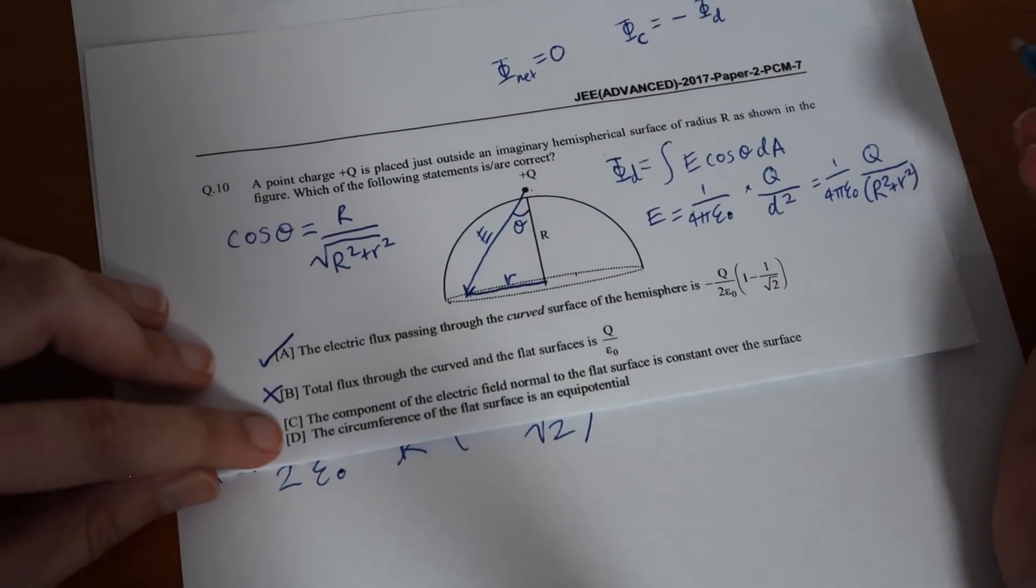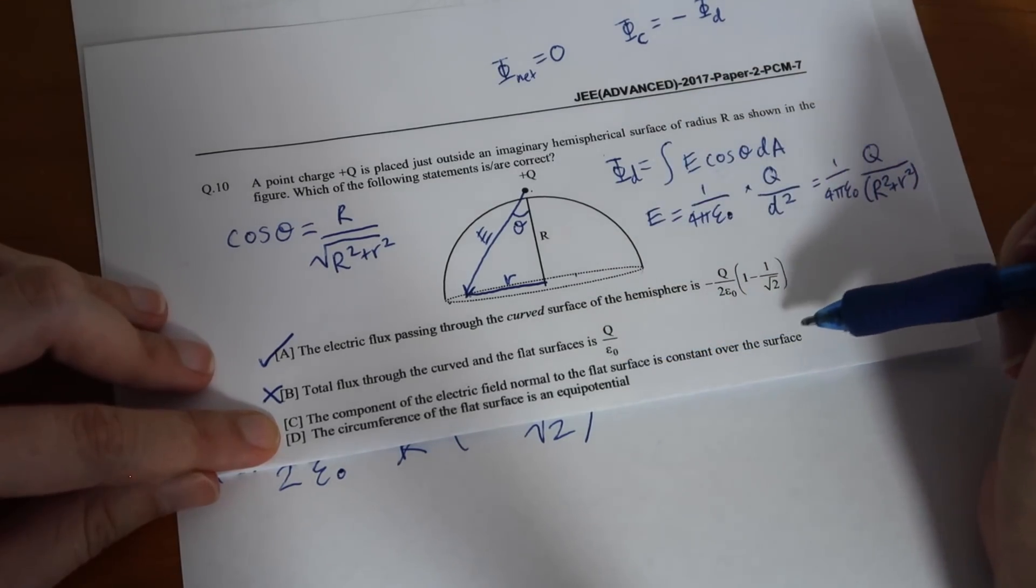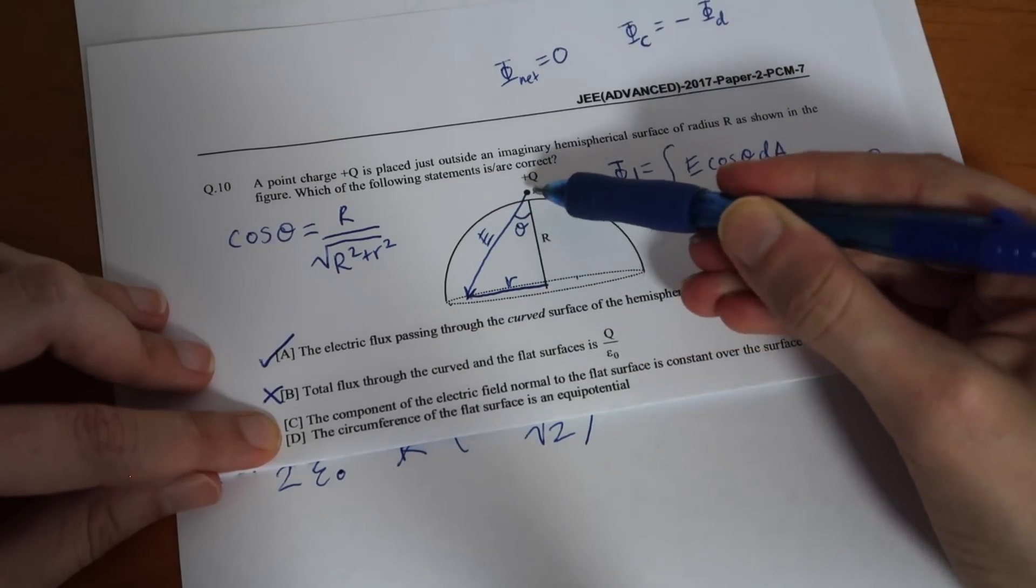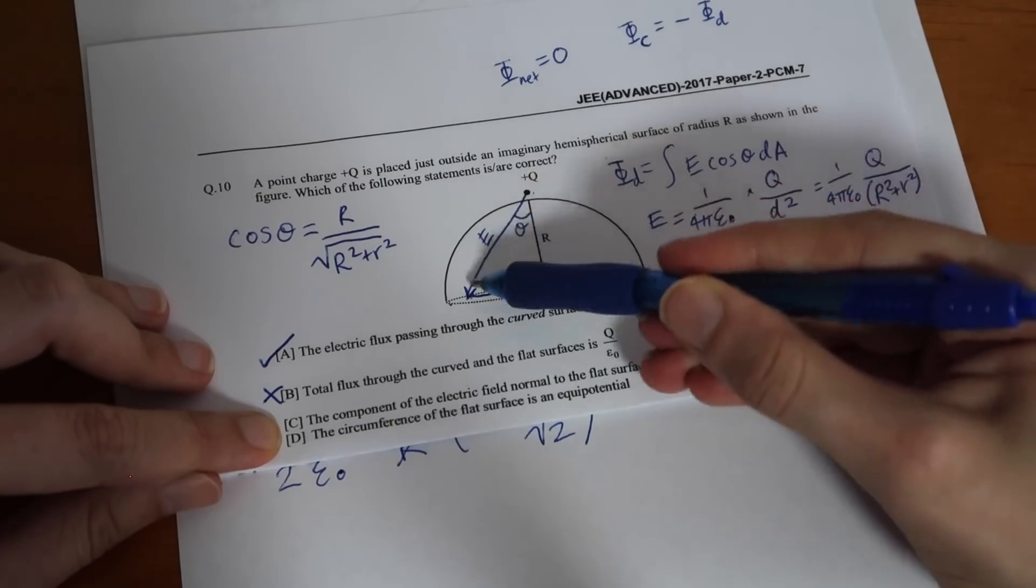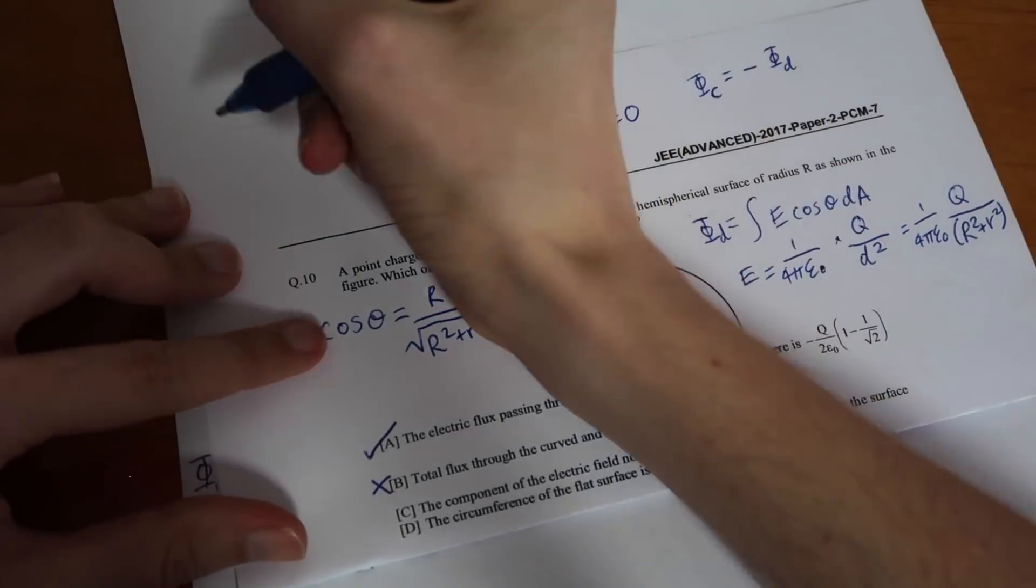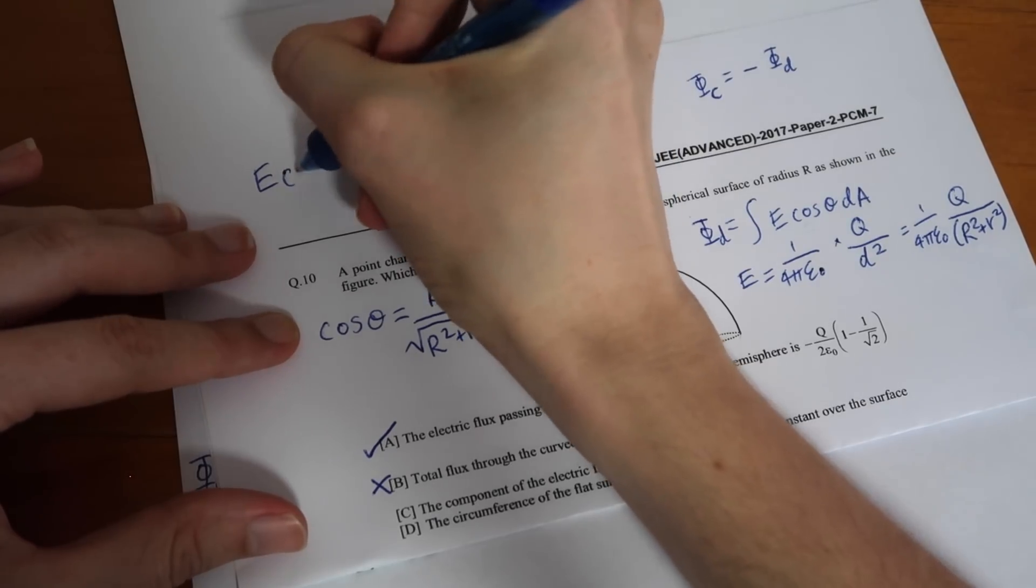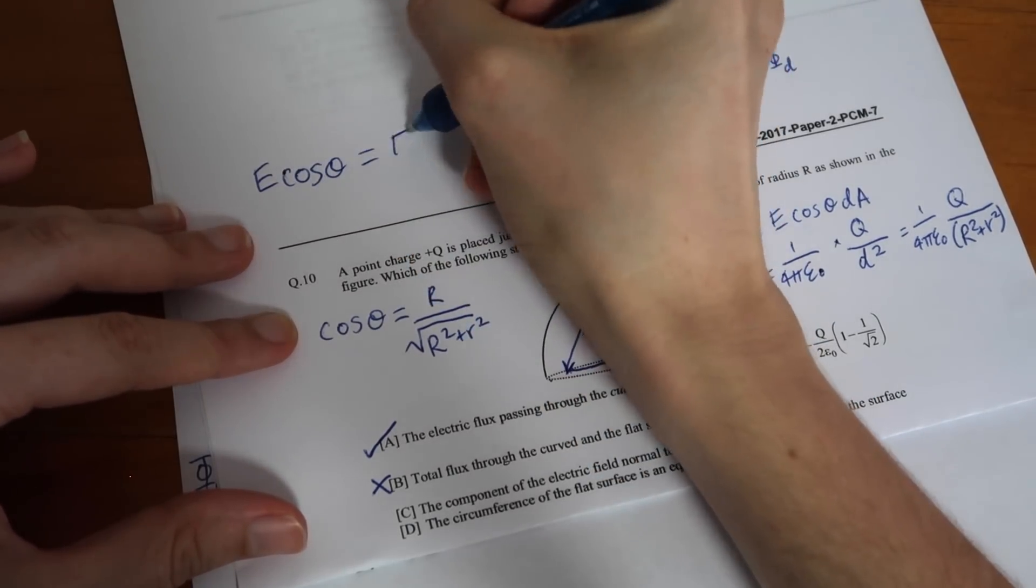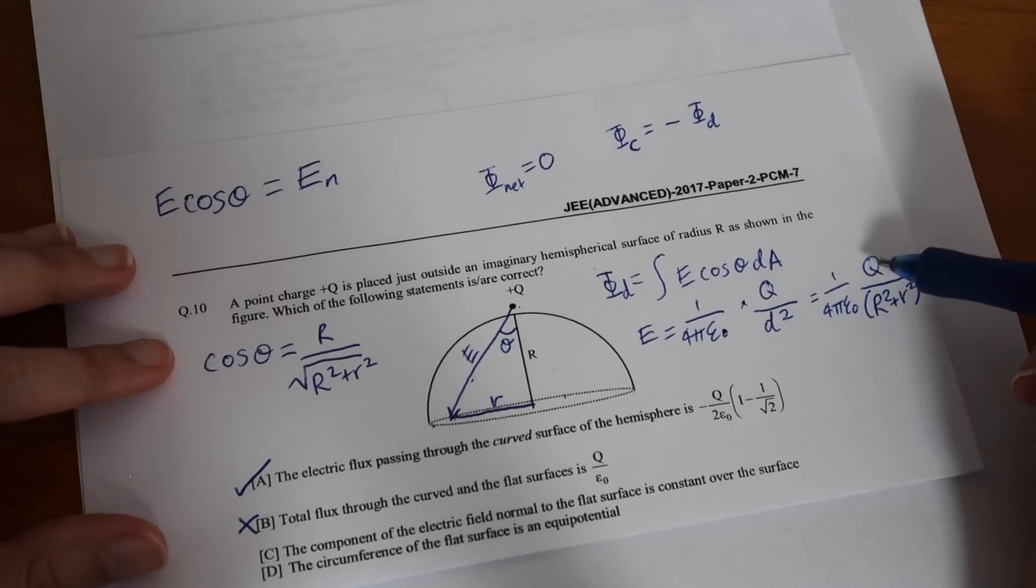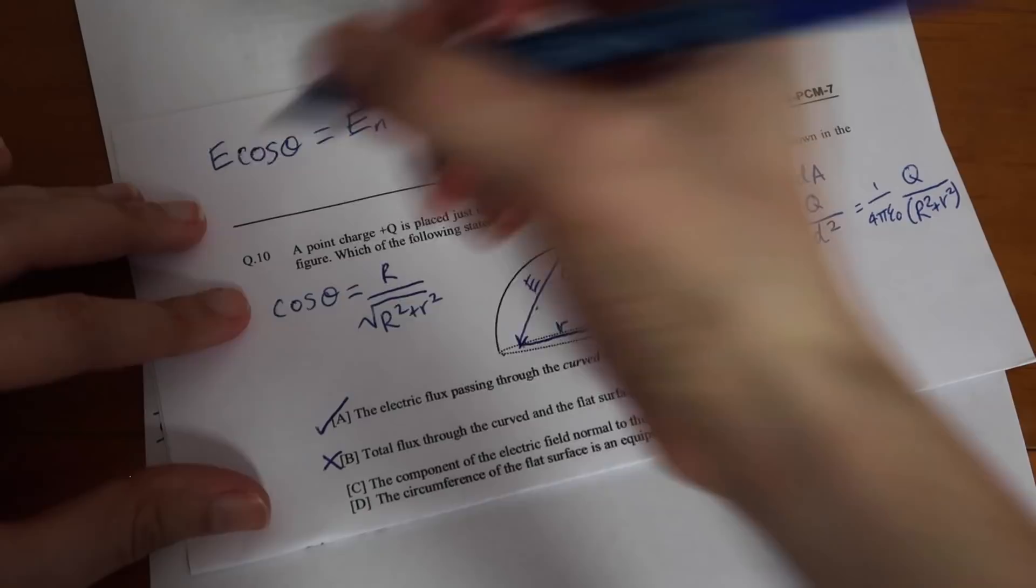Okay looking at that these r's are going to cancel and what did we actually want to figure out? What we just calculated was the flux of the disk which means that if we wanted the flux of the curved surface we just need to stick a negative sign in front of this and actually what we would get is the answer they have here so a is a correct solution. Let's look at part b the total flux through the curved and flat surfaces is this value well we already knew and used the fact that the total flux net flux is going to be zero because the charge is outside the surface so b is not correct.